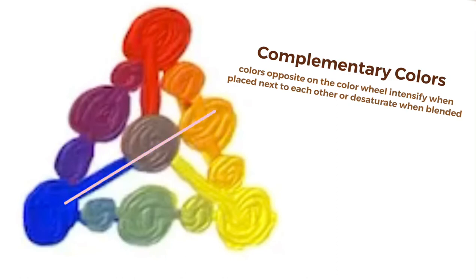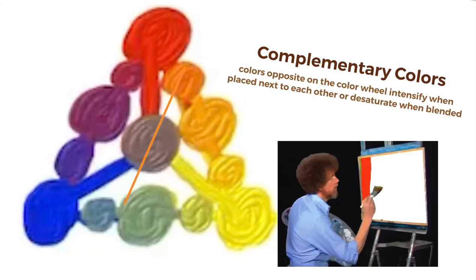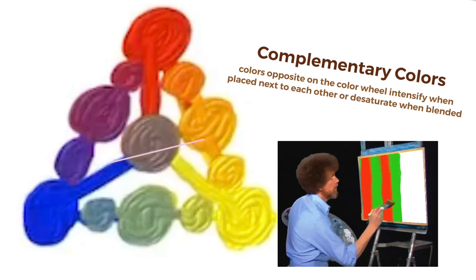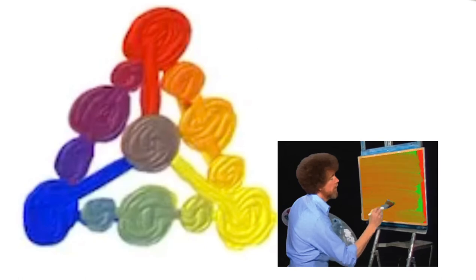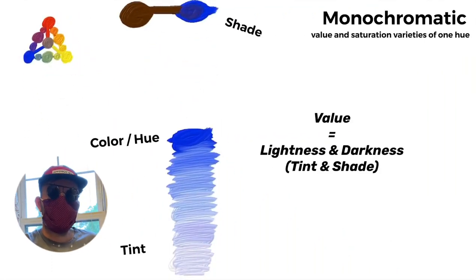So complementary colors are colors that are opposite on the color wheel. And the idea is that when you put complementary colors next to each other, they tend to intensify each other. When you blend them, they will tend to sort of dull one another, or especially if they're dark colors, they will help to make a sort of black.